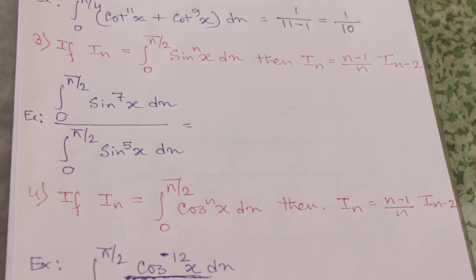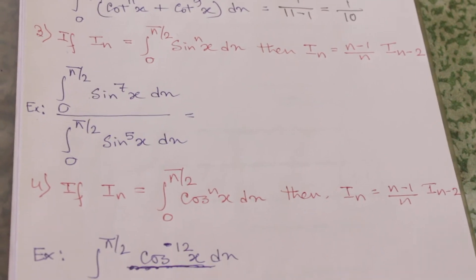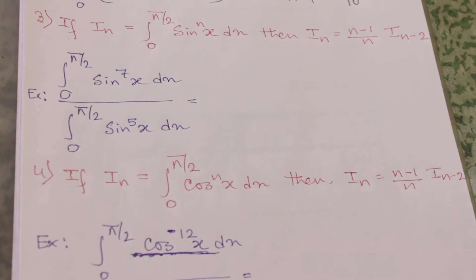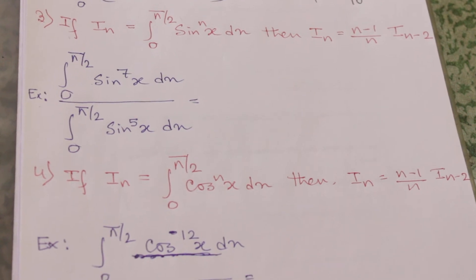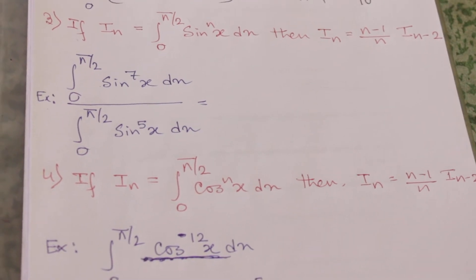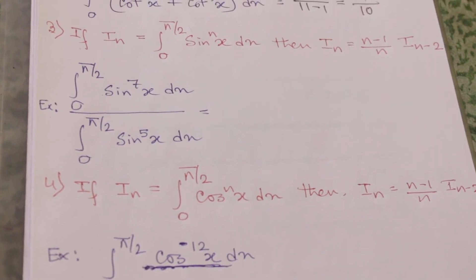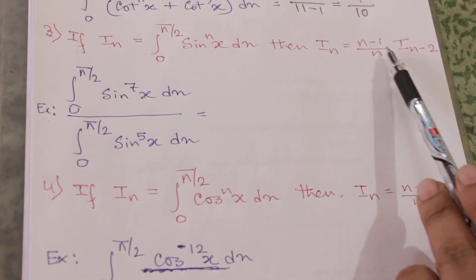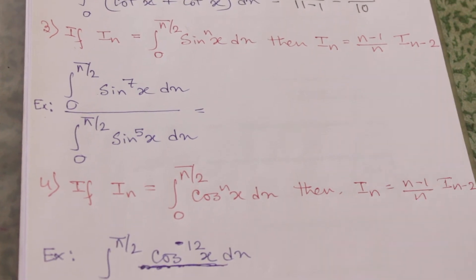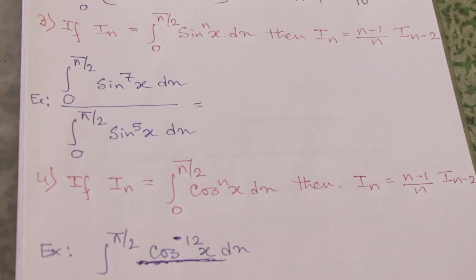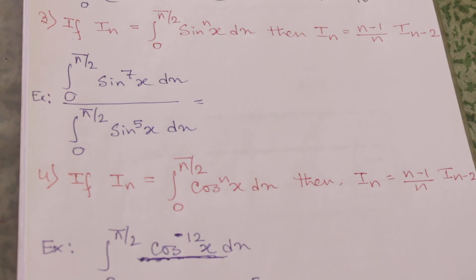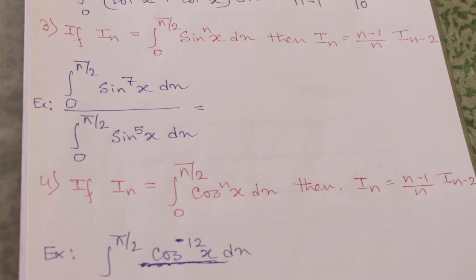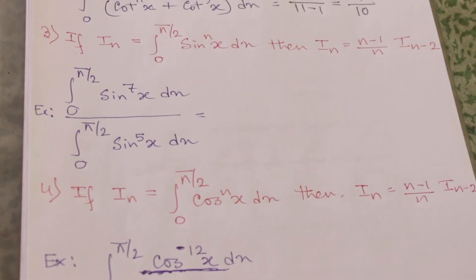Shortcut number three: if I_n = integral from 0 to π/2 of sin^n(x) dx, then I_n = (n-1)/n · I_(n-2), where I_(n-2) = integral from 0 to π/2 of sin^(n-2)(x) dx.